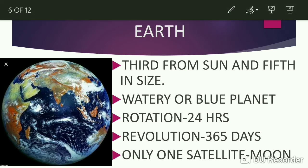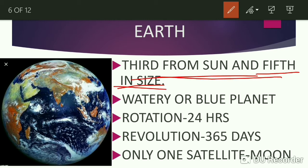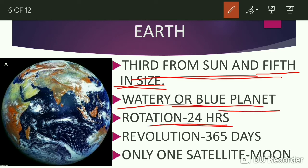Third planet is our Earth. I have discussed about Earth in my previous lecture, so if you want to go in detail, please watch that. Earth is third from the sun and fifth in size. It is a watery and blue planet. Rotation time taken by Earth is 24 hours. Revolution time taken by Earth is 365 days. There is only one satellite of Earth, and that is the Moon.